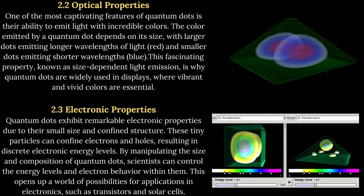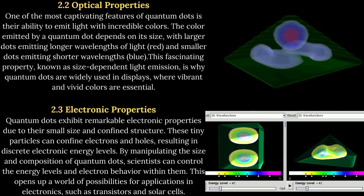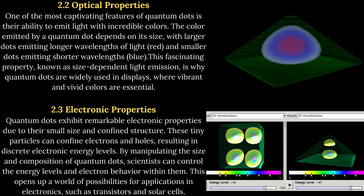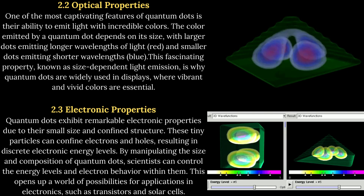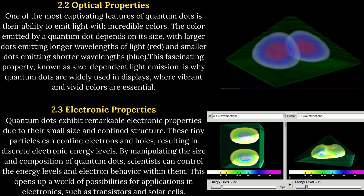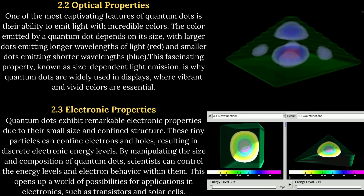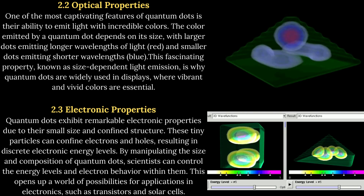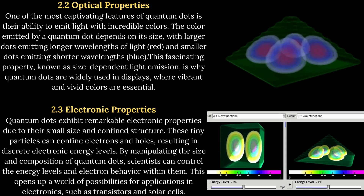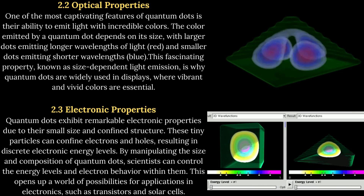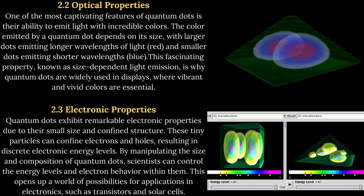2.2 Optical Properties. One of the most captivating features of quantum dots is their ability to emit light with incredible colors. The color emitted by a quantum dot depends on its size, with larger dots emitting longer wavelengths of light — red — and smaller dots emitting shorter wavelengths — blue. This fascinating property, known as size-dependent light emission, is why quantum dots are widely used in displays, where vibrant and vivid colors are essential.